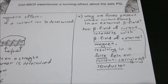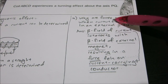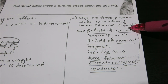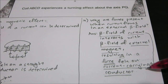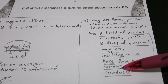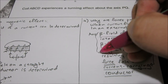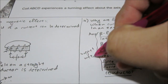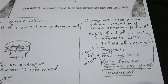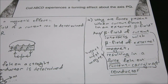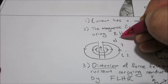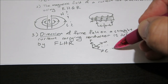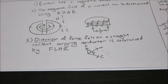Fleming's left hand rule is a tool used to determine the direction of force. The reason forces are felt whenever a current flows in an external magnetic field is because current has a magnetic effect — the magnetic field of the current interacts with the external magnetic field, resulting in a force on the current-carrying conductor. It's not difficult to understand: when you have a north and south, there's attraction; north and north means repulsion. Fleming's left hand rule helps identify the result of this magnetic interaction.